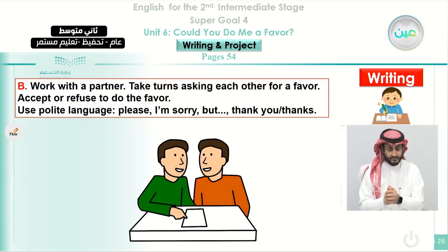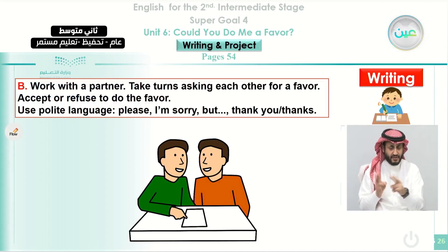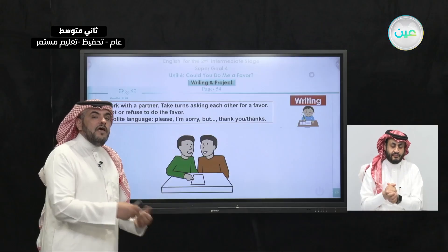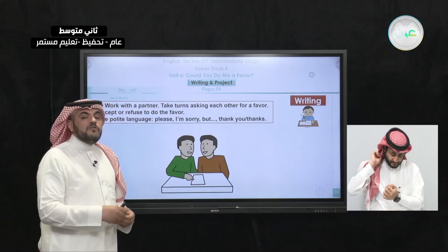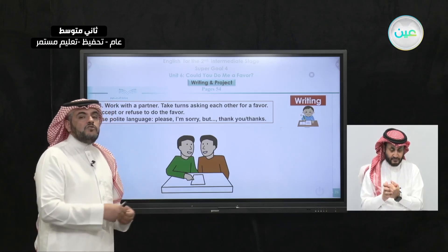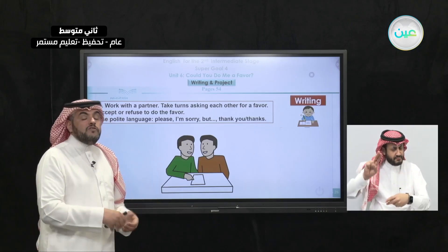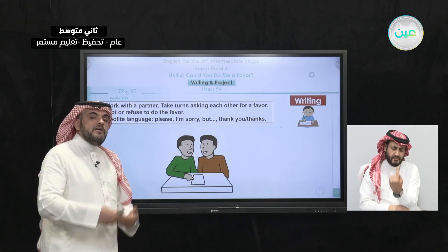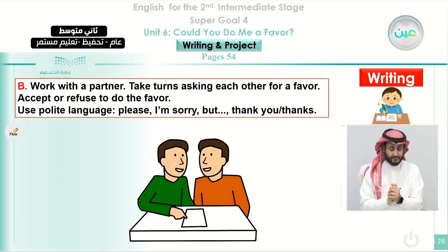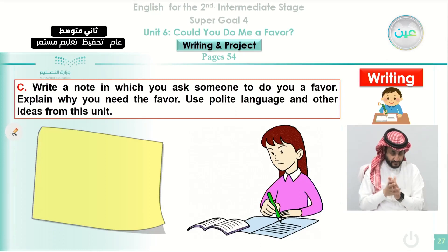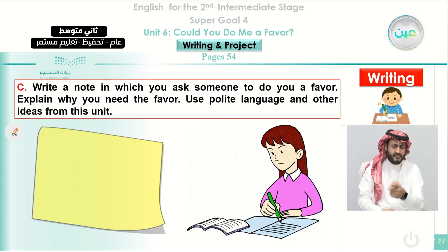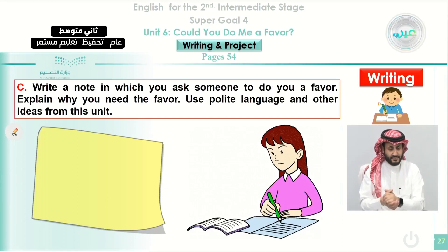Now we move to Exercise B. Work with a partner, take turns asking each other for a favor, and accept or refuse to do a favor. You can do that with your classmates or with a family member. Ask for a favor, wait for the reply, and ask the other party to ask you for a favor too. If you can't do it, say 'sure' and explain how you will do it, or apologize if you can't and give another alternative. Use polite language like 'please', 'I'm sorry, but', and 'thank you' or 'thanks'. Write a note asking someone to do you a favor, explain why you need the favor, and use polite language and other ideas from this unit.